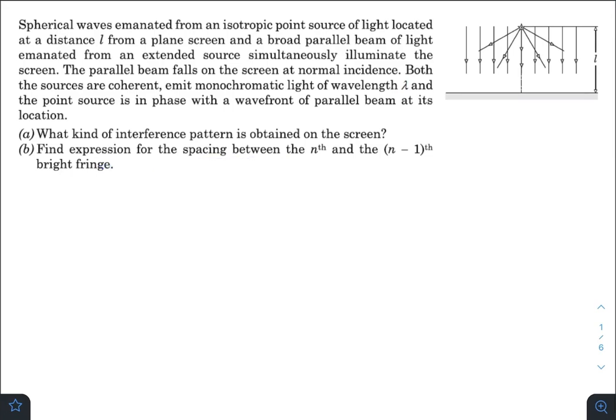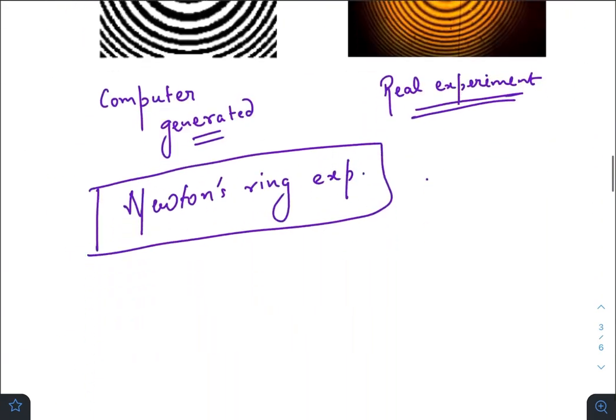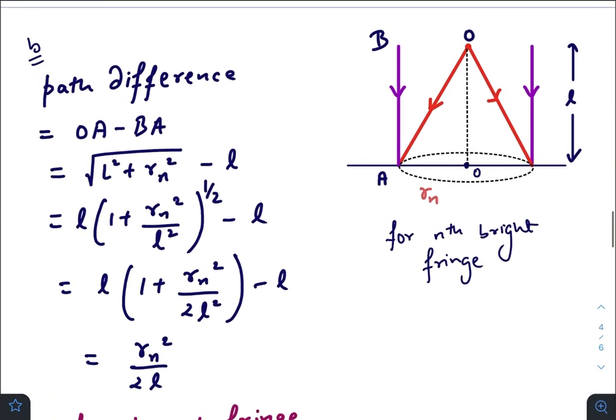Now our second question: find expression for the spacing between nth and n minus 1th bright fringe. So I will borrow the same diagram from the first page. Let us take a bright fringe of radius r_n which will be the nth bright fringe. So the path difference at any point on the circle would be OA minus BA.